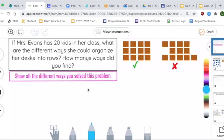All right, this is what you guys get to do. Here's that problem from the directions. If Mrs. Evans has 20 kids in her class, what are the different ways she could organize her desks into rows? How many ways did you find? What I want you to do is to show all the different ways you've solved this problem.